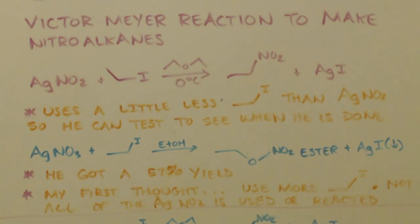So he got a 57% yield. My first thought with that low yield is that, hey, add some more ethyl iodide. You're not using all your silver nitrite up. I could see why he did it. It was so that he could know when he was done. Once he used up all the silver nitrite, if there's still excess ethyl iodide in there, he'll always test saying there's more in there. So I could see why he did it.